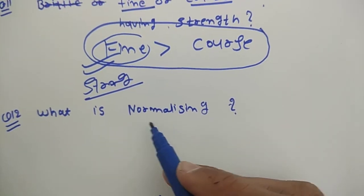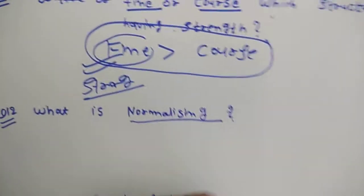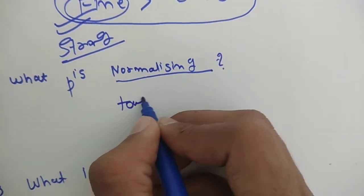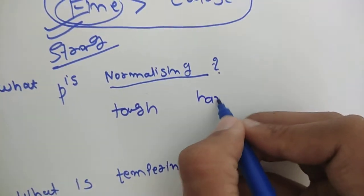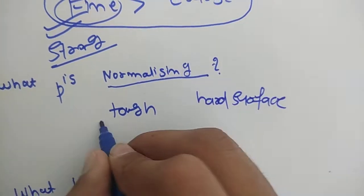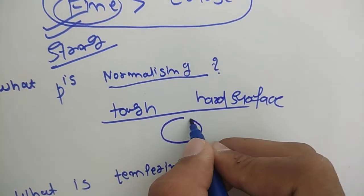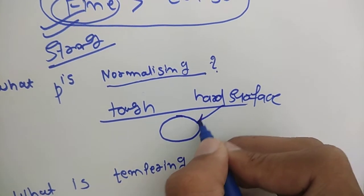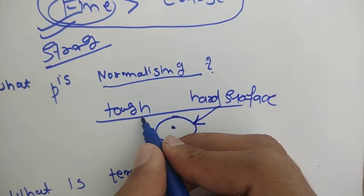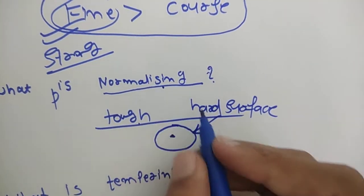What is normalizing? Normalizing is again a heat treatment process, in which the main purpose is to obtain a tough core and a hard surface. We want the surface to have high hardness and the core to be tough. This type of material is formed through the normalizing process.